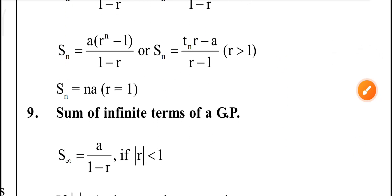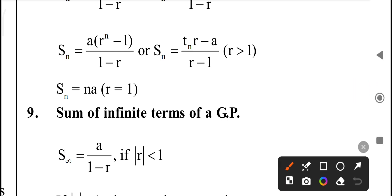Sn is equal to Na when R is equal to 1. Here, common ratio R is equal to 1, and n means number of terms.